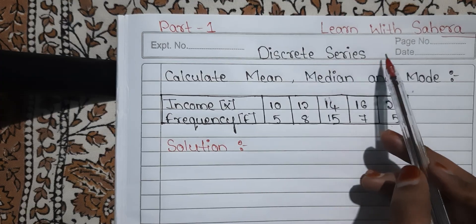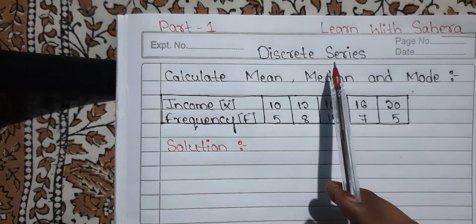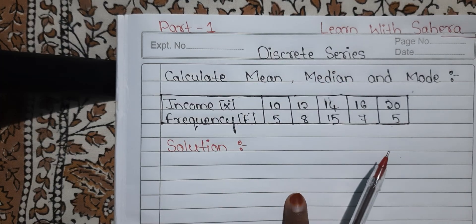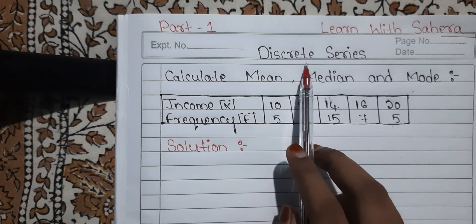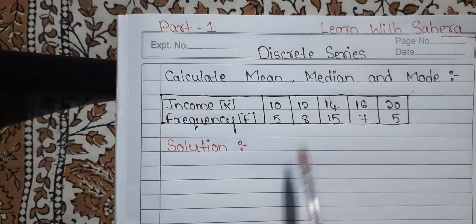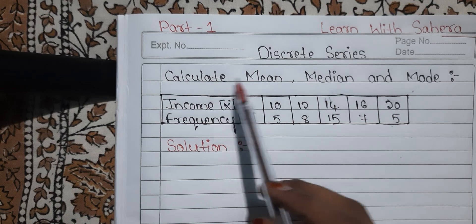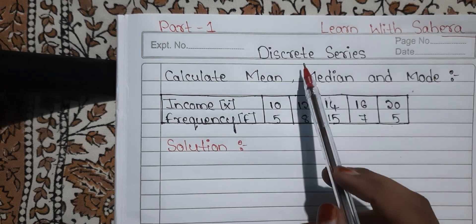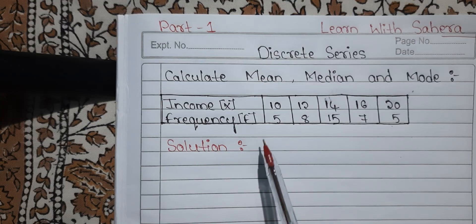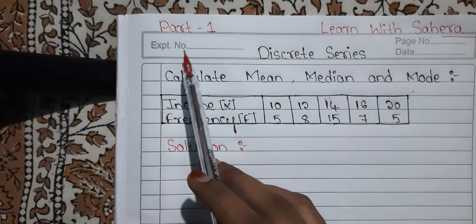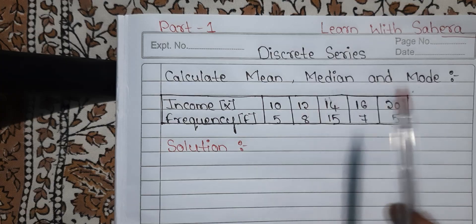Discrete series is also known as ungrouped data. I am going to upload two videos, part 1 and part 2. The video you are watching now is part 1, covering mean, median and mode in discrete series. In part 2, we are going to see the calculation of mean, median and mode in continuous series, which is also known as grouped data. If you watch both videos, you will be perfect with calculation of mean, median and mode in both series.